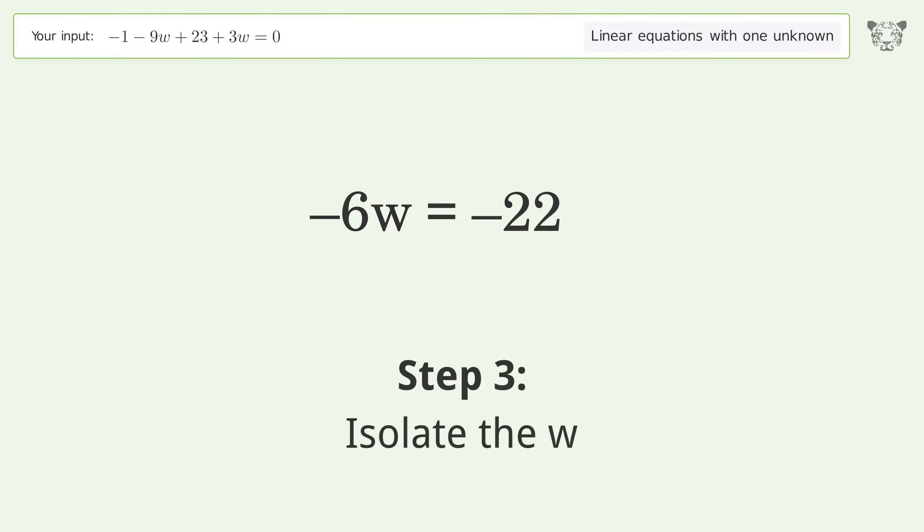Isolate the w. Divide both sides by negative 6. Cancel out the negatives.